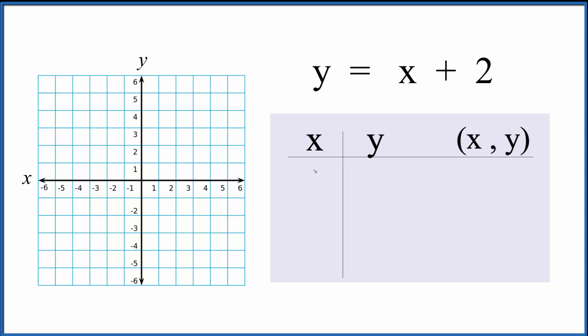If we put a value in for x, I usually start with zero because that'll fit on my graph paper. So if I had zero plus two, that would give me two, so I'd have the point (0, 2). Next let's put 1 in. So 1 plus 2 gives us 3, so we get (1, 3).